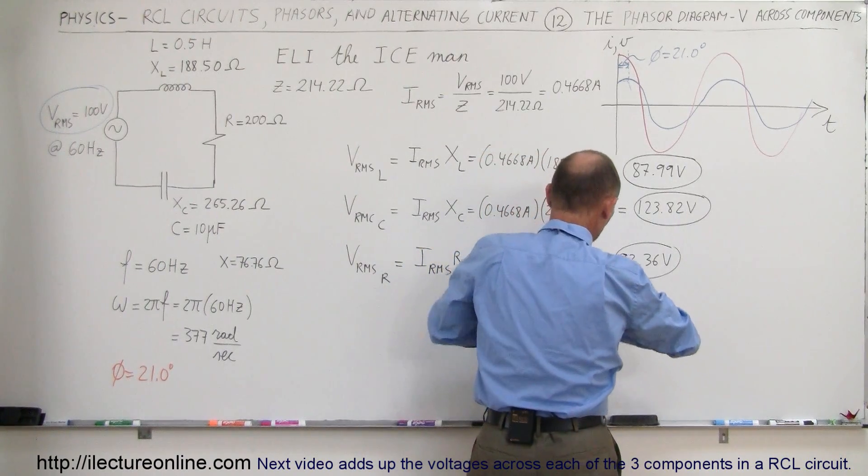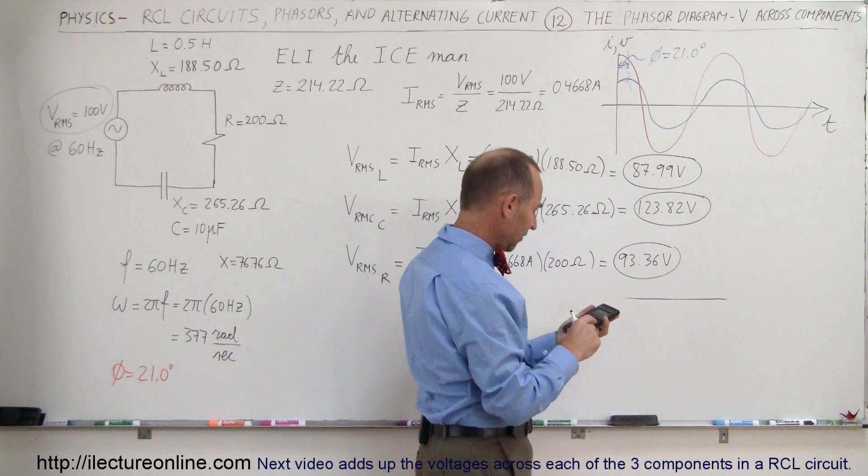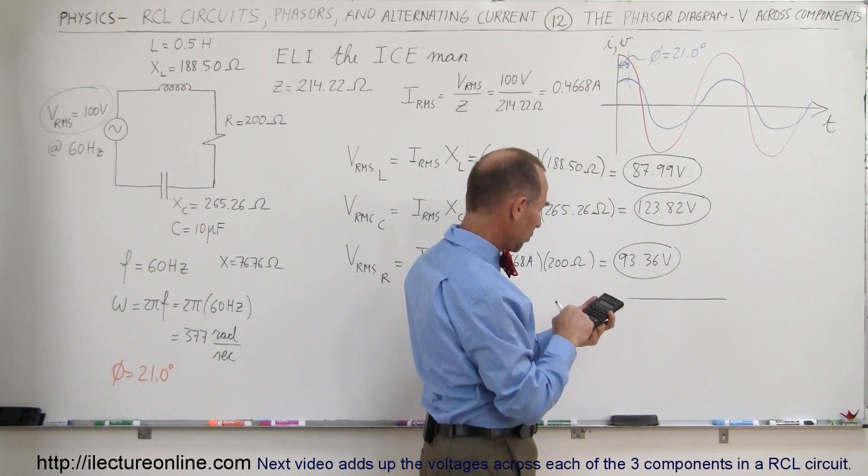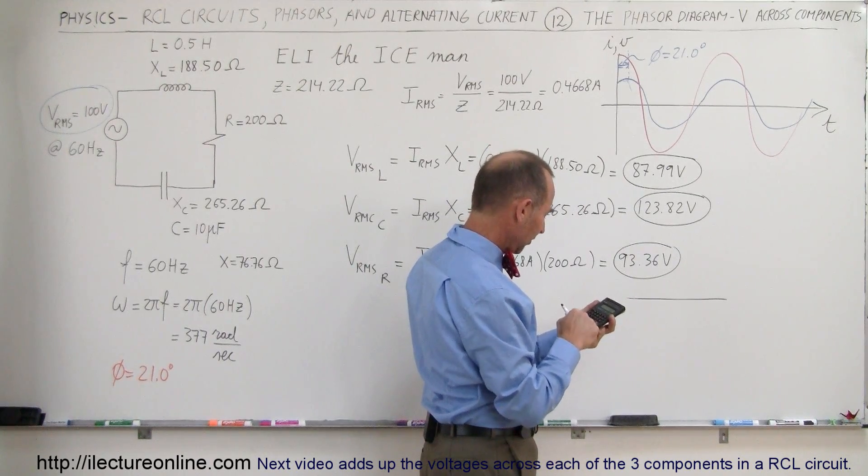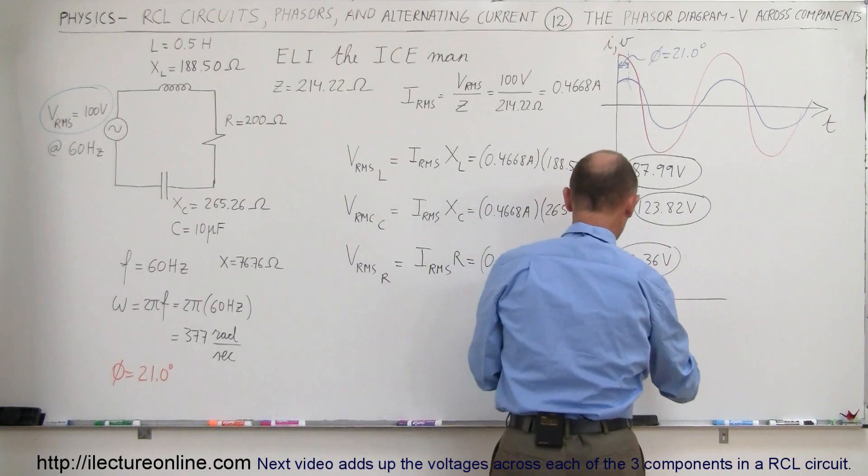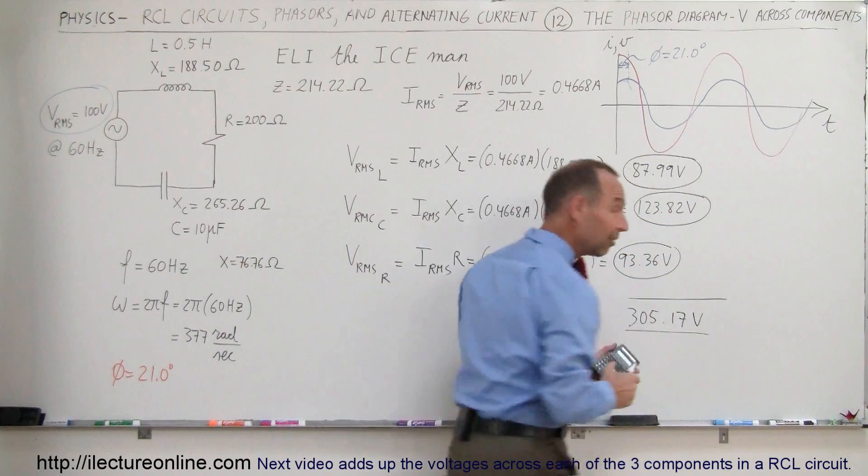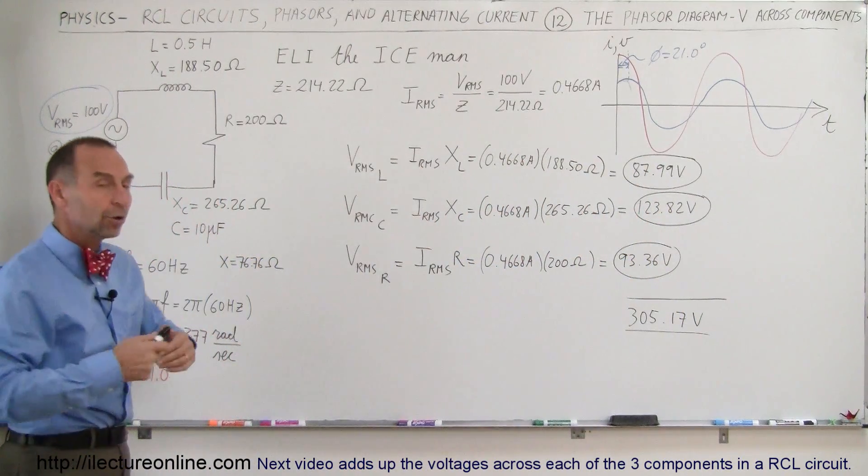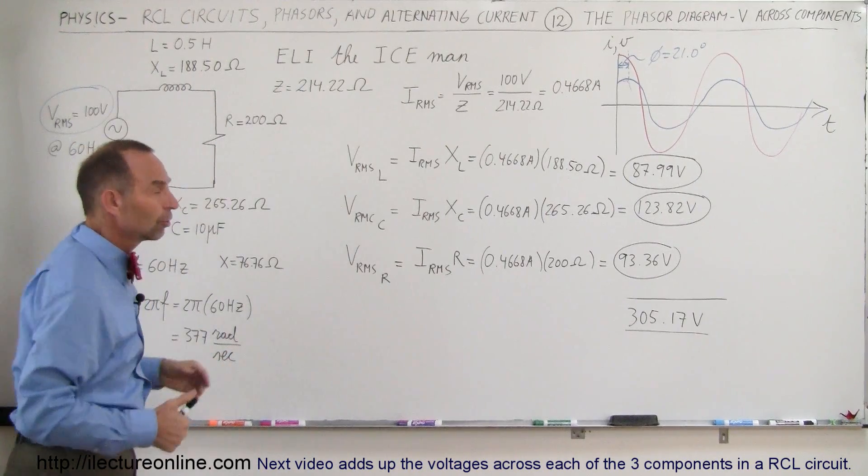Something very strange happens when we add the three voltages together. We get 87.99 plus 123.82 plus 93.36, and we get a total of 305.17 volts. Wow, that doesn't make a lot of sense. How can all the voltages across the three components not add up to the total voltage of the source?